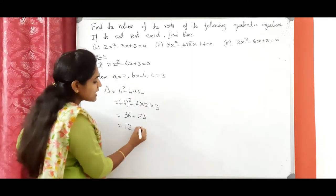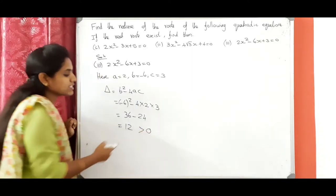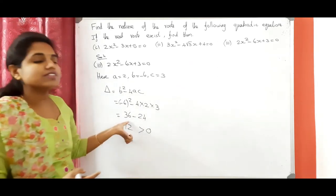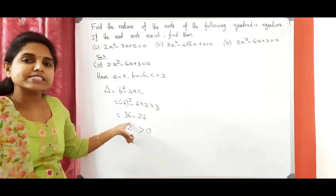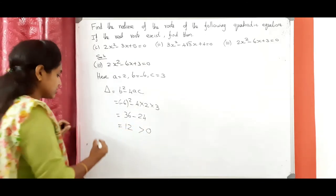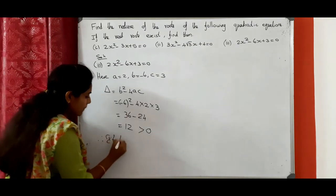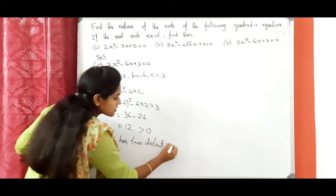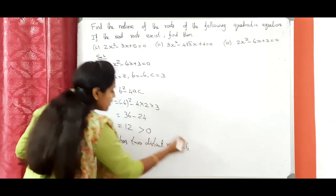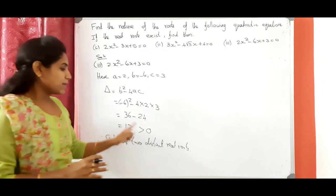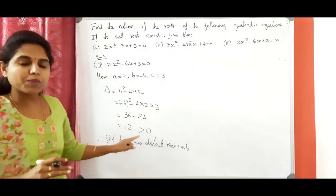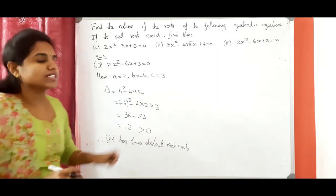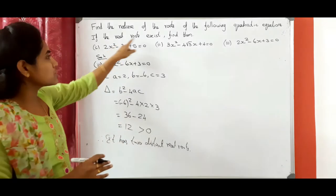So we get positive 12, which is greater than 0. If we get a positive value, the nature of the roots is two distinct real roots. Therefore, it has two distinct real roots. If the value is negative, there are no real roots; if equal to 0, two equal real roots; if positive, two distinct real roots. Now the real roots exist, so we need to find them.